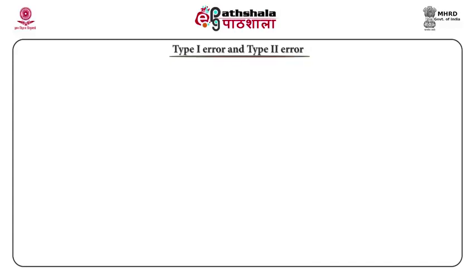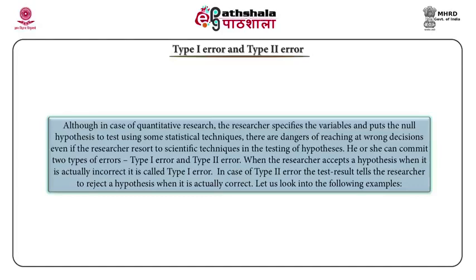Type 1 and Type 2 errors: although in quantitative research the researcher specifies variables and puts the null hypothesis to a test using statistical techniques, there are dangers of reaching wrong decisions even with scientific methods. A researcher can commit two types of errors. Type 1 error occurs when the researcher accepts a hypothesis when it is actually incorrect. In Type 2 error, the test result tells the researcher to reject a hypothesis when it is actually correct.